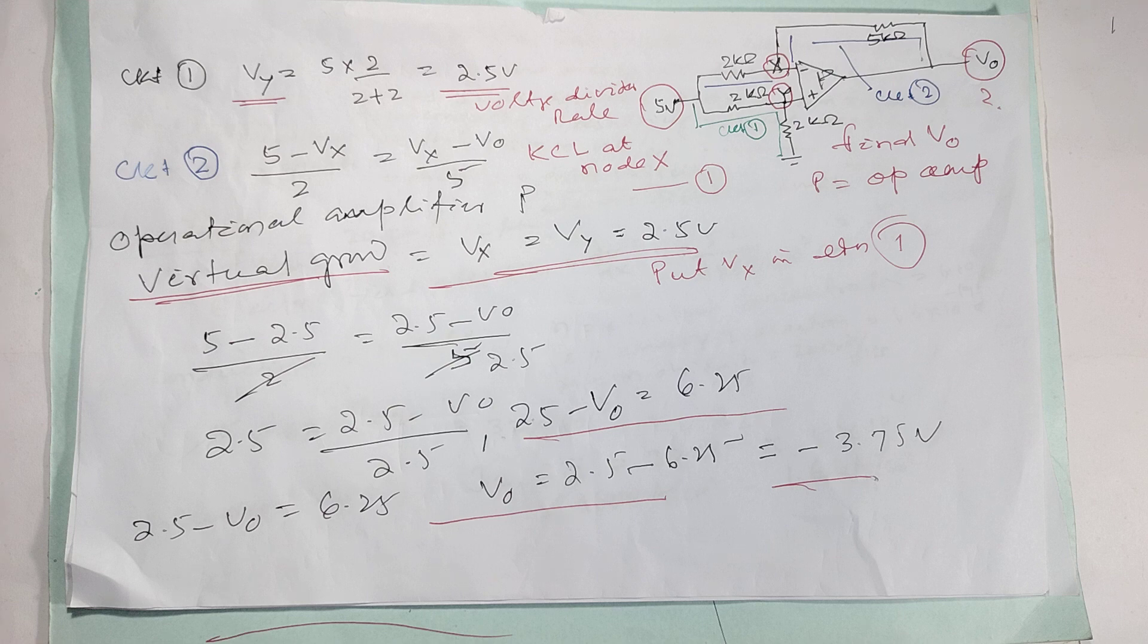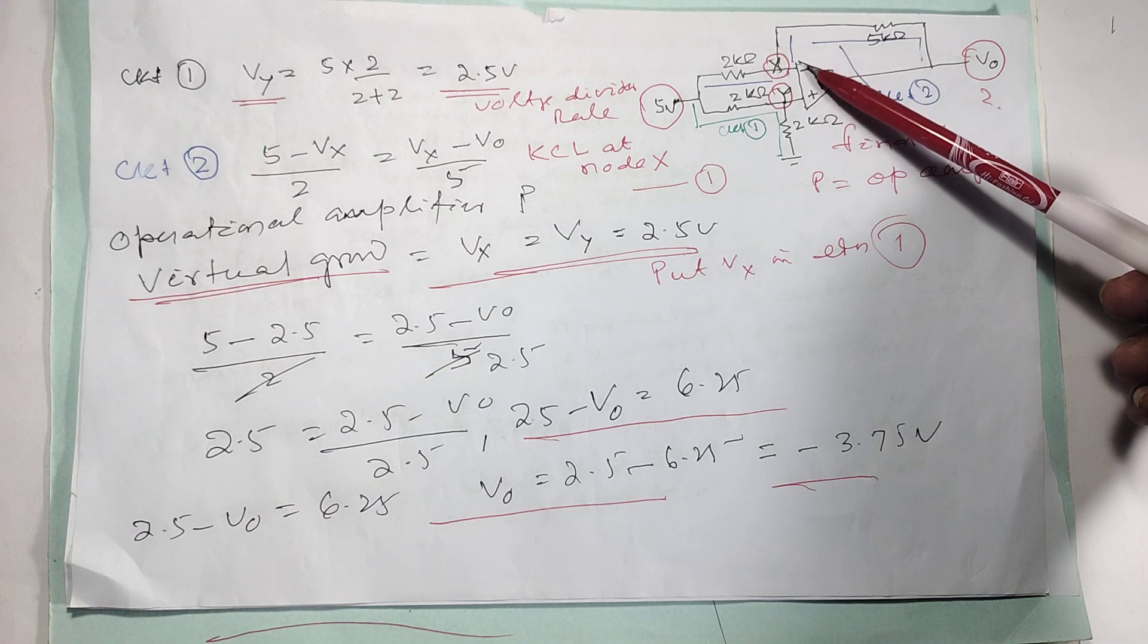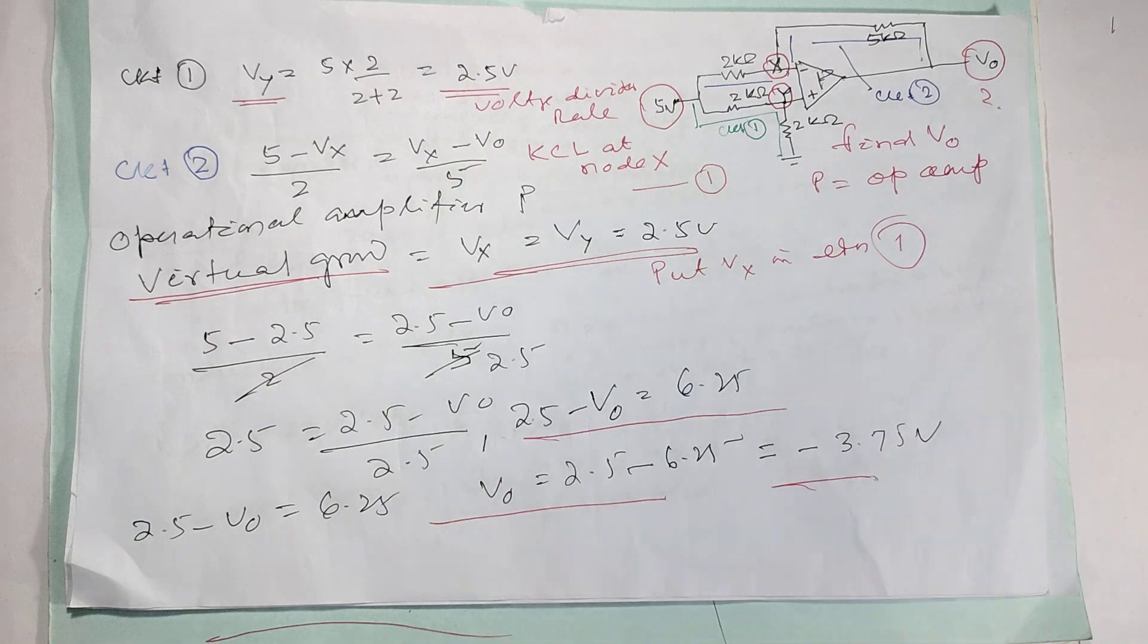Minus 3.75 volt. So what is important here? You should know these two, virtual ground. This voltage equal to this voltage. This is the most important. And it is completed now. Thank you.